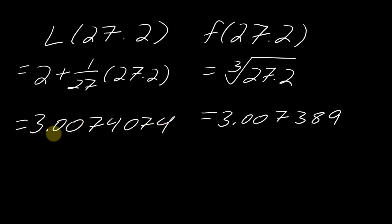So the values are actually pretty impressive here. So here my linearization came out to 3.0074. So just about the first four digits are the same, right? They both come up to 3.0074. And then after that, they start to kind of deviate, but it's a pretty good approximation.